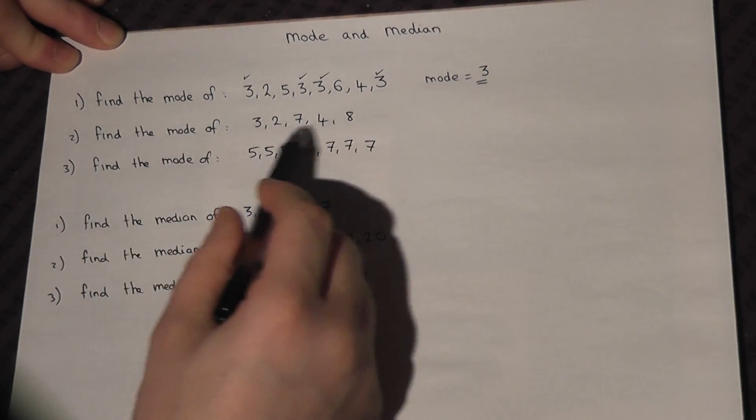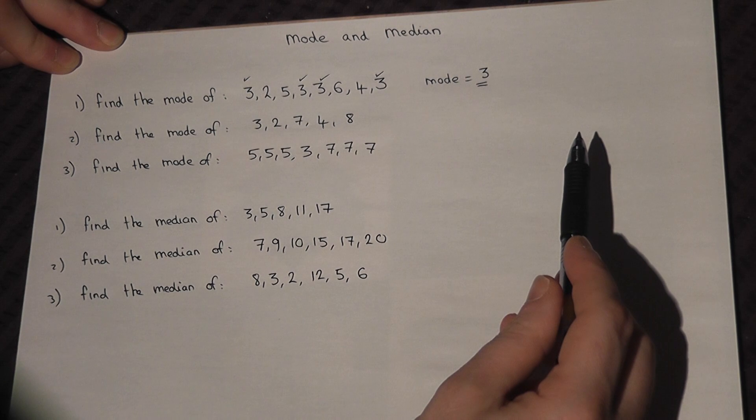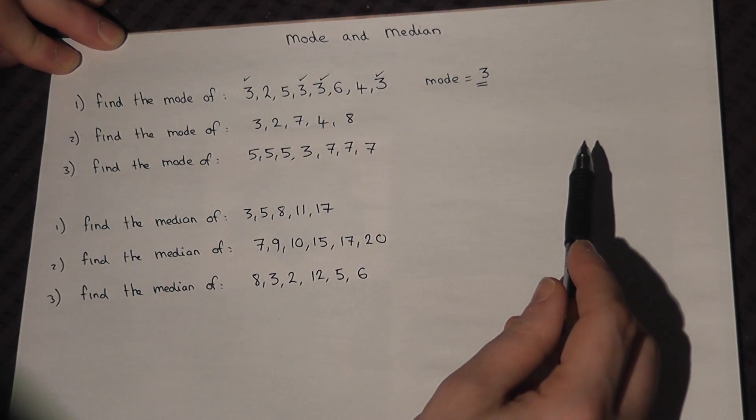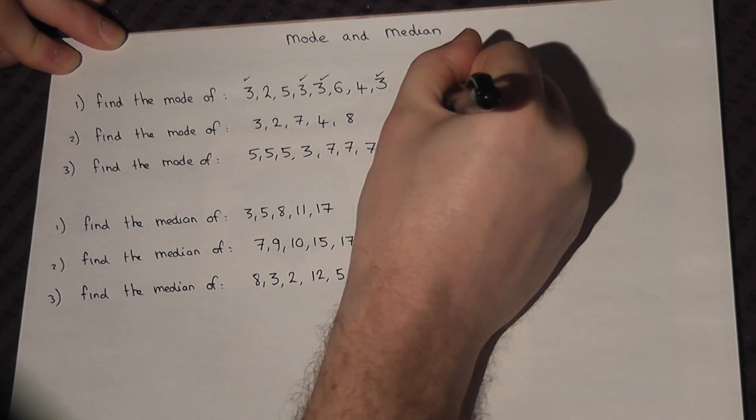Now for the second set of data, no number occurs more than once. There is no most frequent number. So in this case, there is no mode.